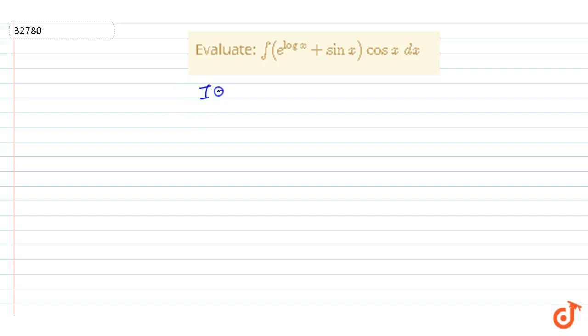In this question we have to find the integration of e to the power log x plus sin x into cos x dx. Now here we are having e to the power log x, so we can write this as x, since e to the power log x equals x.